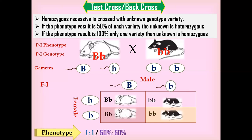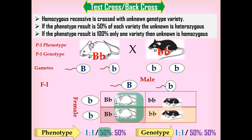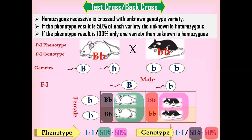The other eggs behave the same way. The phenotypic result is 50-50%, and the genotypic result is also 50-50%. The phenotype shows 50% white and 50% black, giving a 1:1 ratio. The genotypic result shows 50% heterozygous (capital B, lowercase b) and 50% homozygous recessive (lowercase b, lowercase b). So the unknown variety is confirmed to be heterozygous.